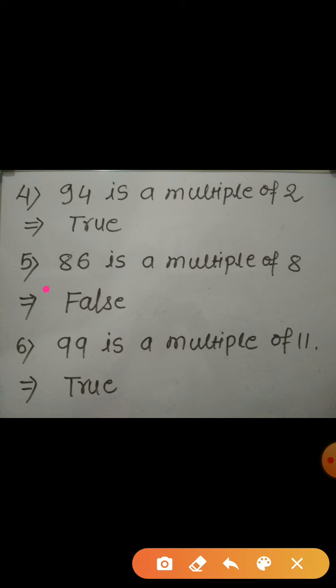Now, the next one. 86 is a multiple of 8. This one is false. 86 doesn't come in the table of 8. See, 8 tens are 80. And if we add 8 in 80, what we will get? 88, not 86, right? It means this one is false.